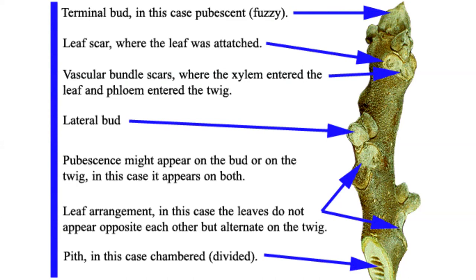You can have pubescence — and remember we already talked about the terms used to describe pubescence when discussing leaves, so you can use the same terms for twigs. We might see pubescence on the bud or also on the twig. From leaf scars, you can tell leaf arrangement even if you have no leaves. In this case there's only one leaf scar per node, which tells us that it's alternate. Finally, the pith shown in cross-section at the bottom is divided, or what we would call chambered.